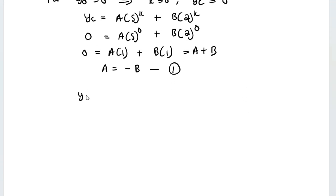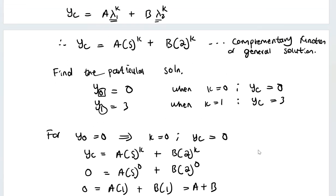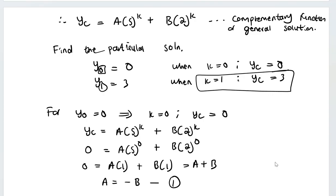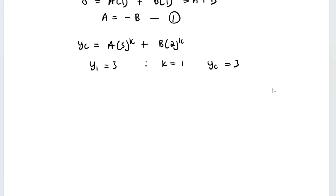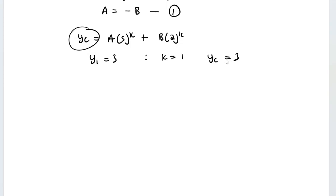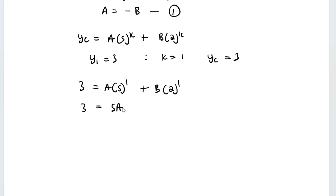Applying the second condition: when k=1, y sub c equals 3. Substituting gives 3 = A·5¹ + B·2¹, so 3 = 5A + 2B. This is equation 2. We now have two unknowns and two equations to solve simultaneously.